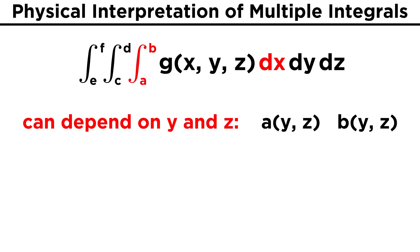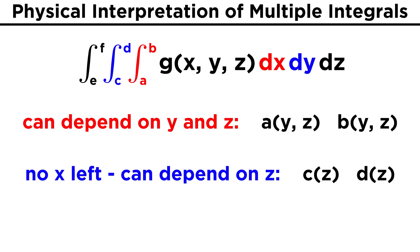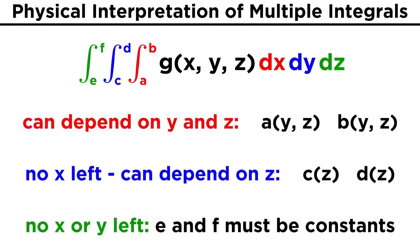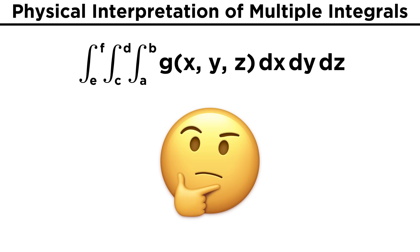For a triple integral, if we integrate x first, its bounds a and b can depend on either of the other two variables, y and z. If we integrate y next, bounds c and d can no longer depend on x, but can still depend on z. Finally, the last variable z can only vary between two constants, as all other variables have been integrated out, and of course the bounds cannot have the same variable that is being integrated. There's an incredible depth to multiple integrals that can't be covered in a single tutorial, but we've laid out the type of thinking needed to approach setting up bounds. Multiple integrals are a key technique in a number of fields of math and science, so getting down the basics is key.